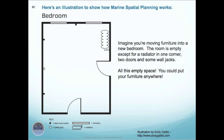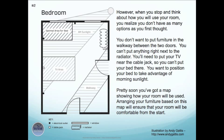Here's an illustration to show how Marine Spatial Planning works. Imagine you're moving furniture into a new bedroom. The room is empty except for a radiator in one corner, two doors, and some wall jacks. All this empty space — you could put your furniture anywhere. However, when you stop and think about how you will use your room, you realize you don't have as many options as you first thought. You don't want to put furniture in the walkway between the two doors. You can't put anything right next to the radiator. You'll need to put the TV near the cable jack, so you can't put your bed there. You want to position your bed to take advantage of the morning sunlight. Pretty soon you've got a map showing how your room will be used.